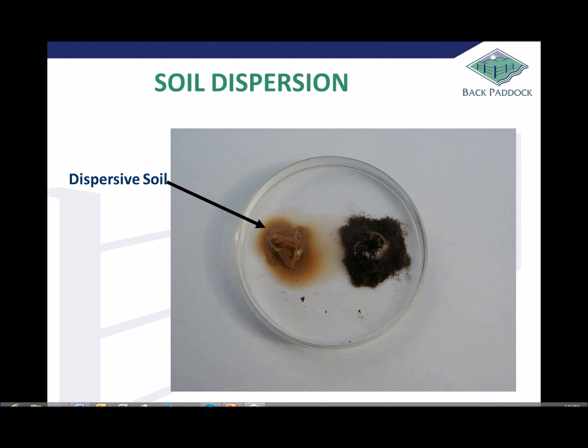So on the right, the slaking is caused by low organic matter. How do we fix that? Well, by building organic matter levels. On the left, a chemical problem — high sodium. We balance that with extra calcium in the form of gypsum.